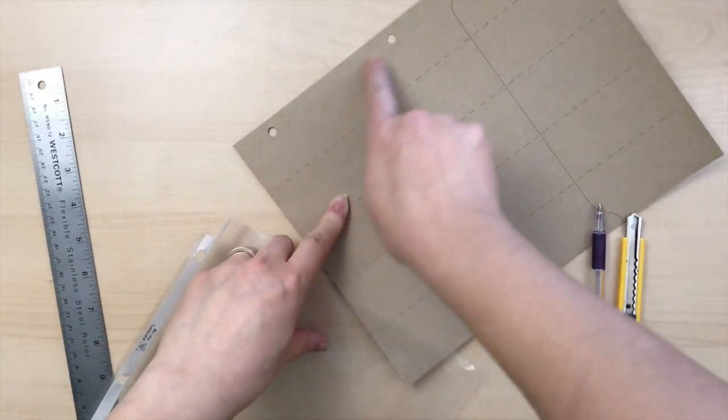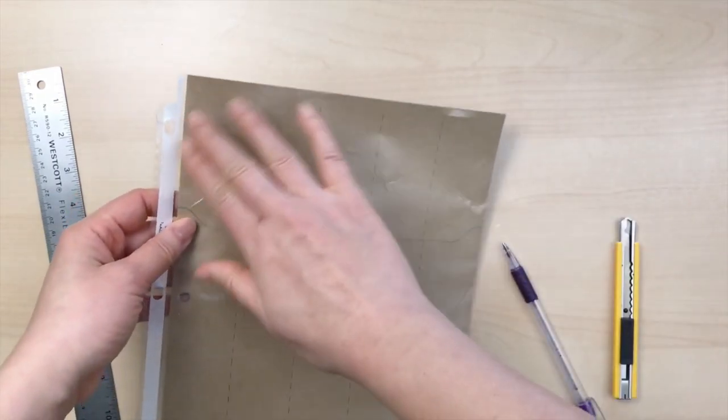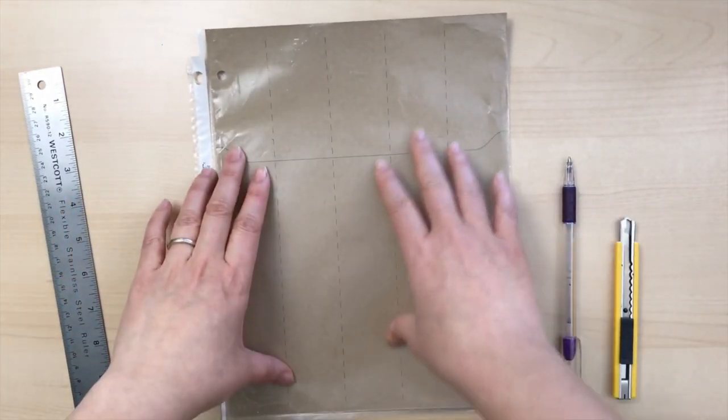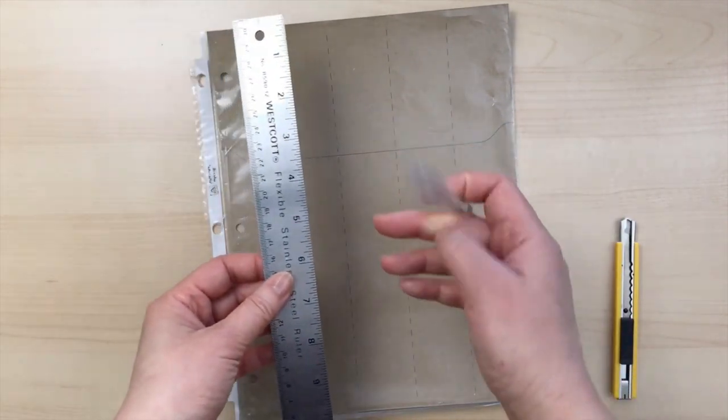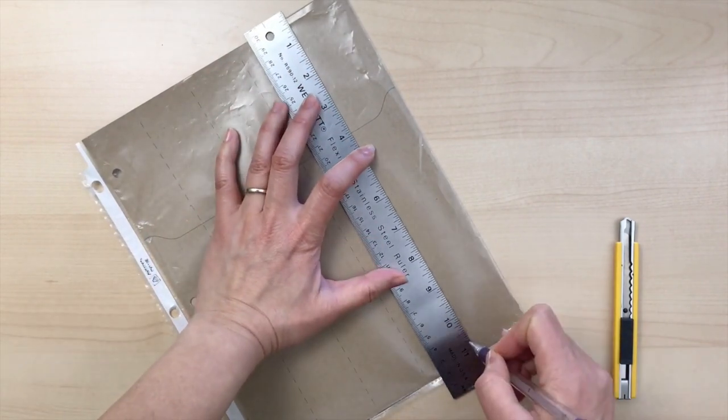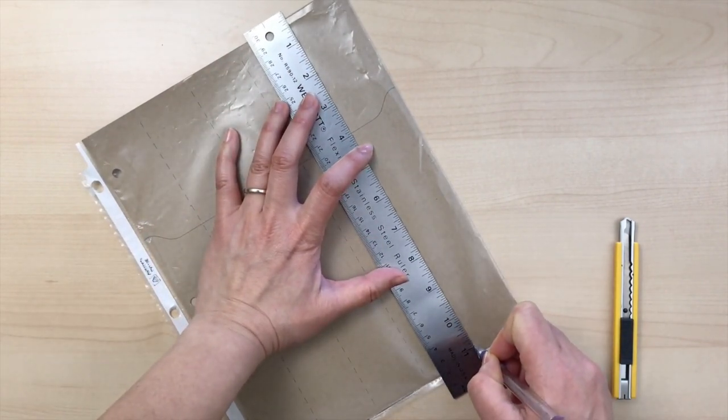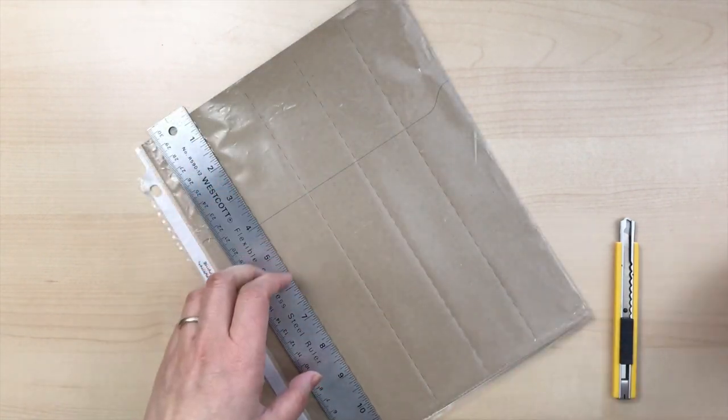Don't worry that there's holes here, it was just left over from another project. It doesn't matter that there's holes there. Now we've got it inside our protector and we're just going to use a scoring tool and basically lightly score across the surface of the sheet protector. It's going to give us a general guideline when we go sewing.